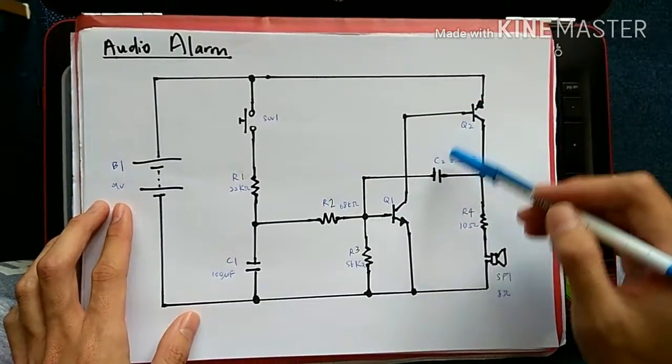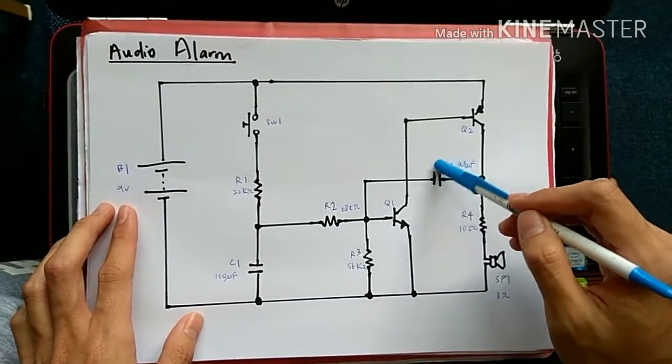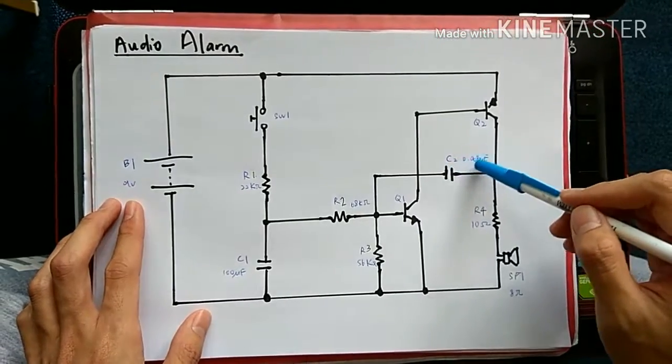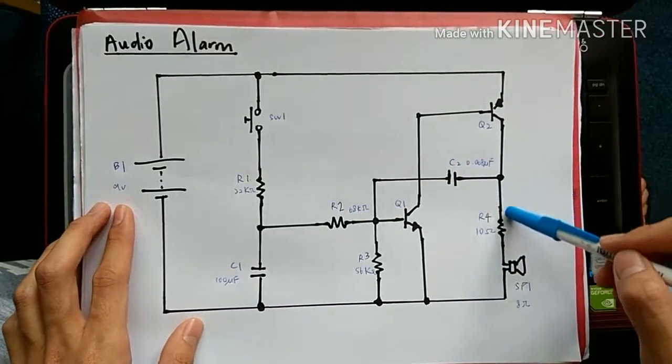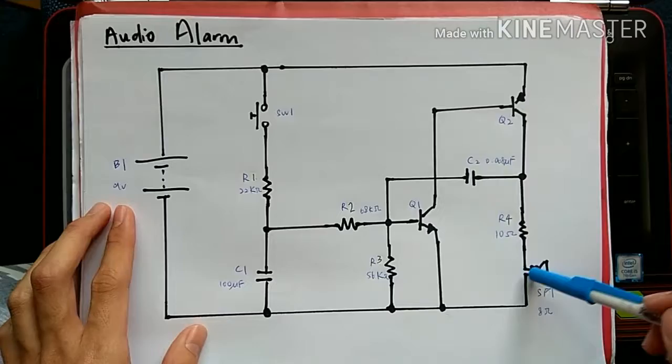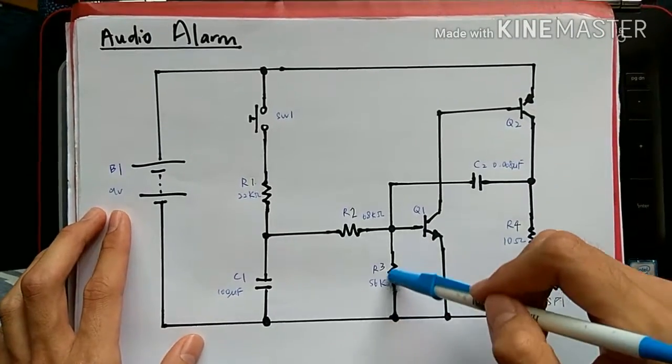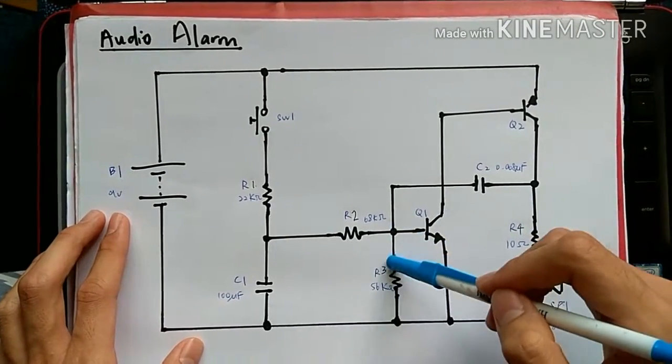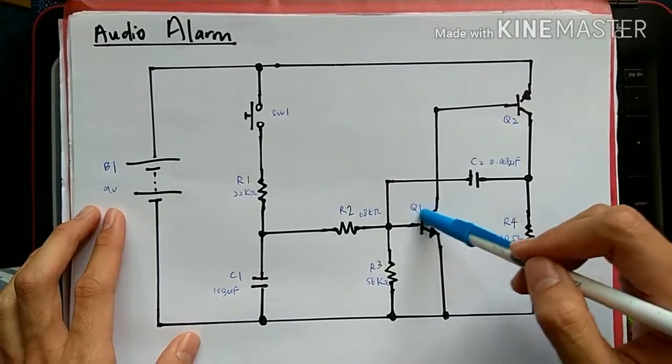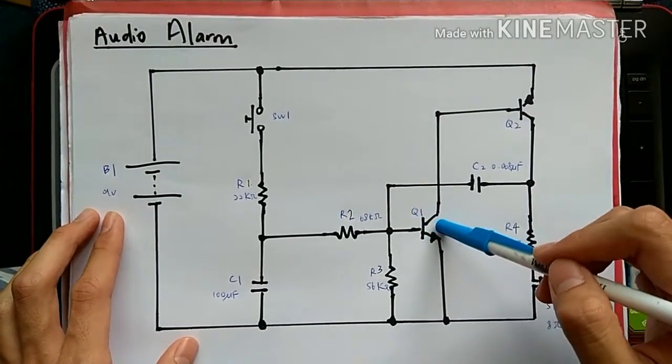When Q2 stops working, C2 will start to discharge, changing the current to go to R4 and SP1, and again it will go through R3 and make Q1 start to work again.